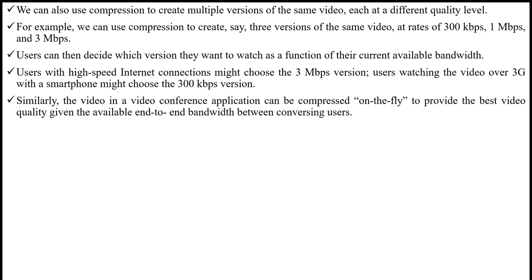Users with high-speed internet connections might choose the 3 Mbps version, while users watching the video over 3G with a smartphone might choose the 300 kbps version. Similarly, the video in a video conference application can be compressed on the fly to provide the best video quality given the available end-to-end bandwidth between conversing users. In the next video, we will discuss important properties of audio.